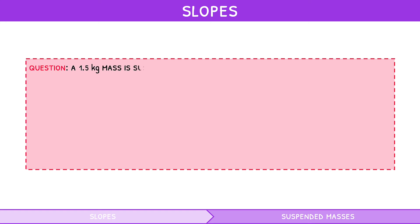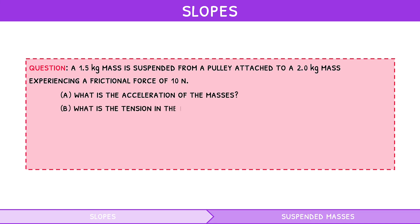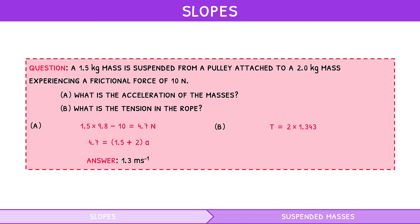Let's take a look at an example question. A 1.5 kilogram mass is suspended from a pulley attached to a 2 kilogram mass experiencing a frictional force of 10 newtons. A: What is the acceleration of the masses? B: What is the tension in the rope? For A, the weight of the suspended mass minus the force of friction is 4.7 newtons, so the masses are accelerating. Therefore 4.7 newtons equals mass 1 plus mass 2 times acceleration, giving an acceleration of 1.3 meters per second squared. For B, tension equals mass 2 times acceleration plus friction, which is 13 newtons.